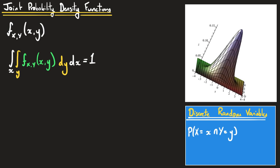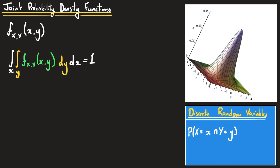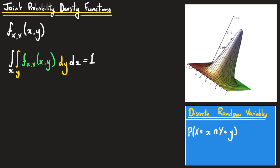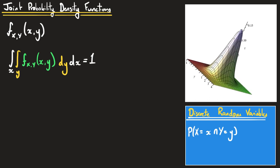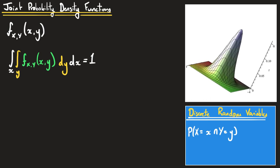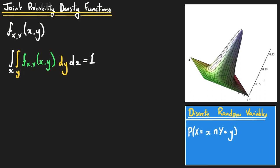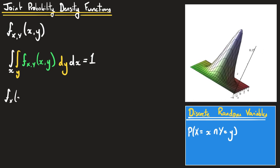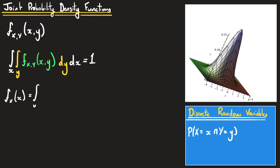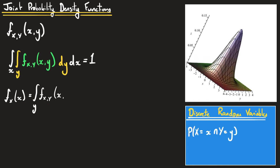We can apply exactly the same sorts of rules as we did with discrete random variables. If we want to find the marginal probability density function of x, we hold x constant and add up all of the possible probabilities across all possible ranges of y. That is, the marginal PDF of x is just equal to the integral over the full range of y of our joint probability density function.